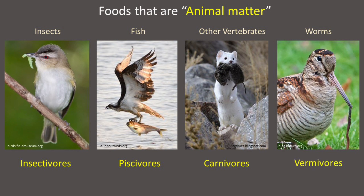Wildlife that eat worms as their primary food source are called vermivores. American woodcock, American robin, many shorebirds, and moles are the most common vermivores in New England.